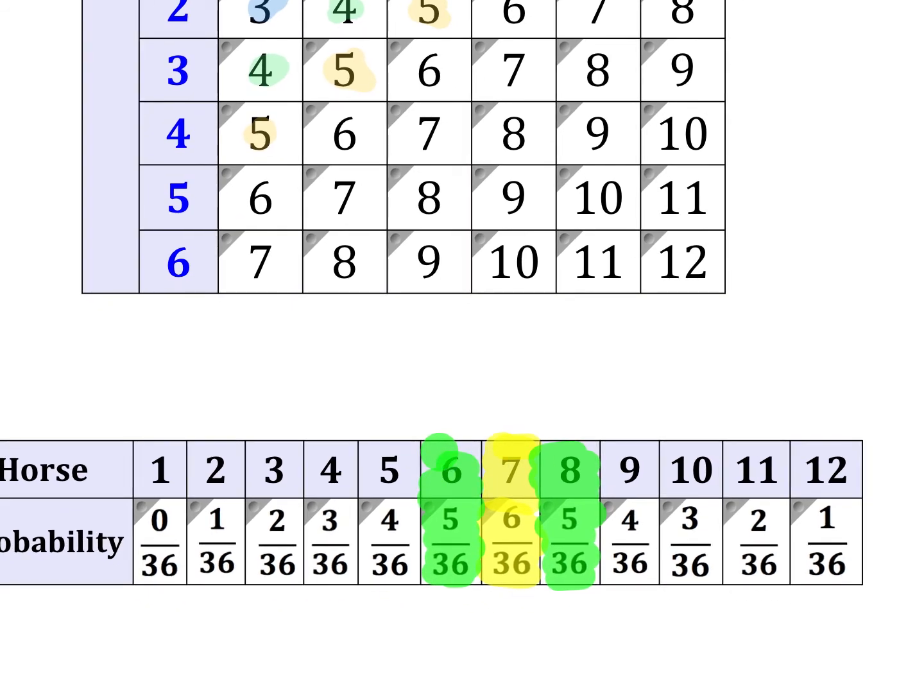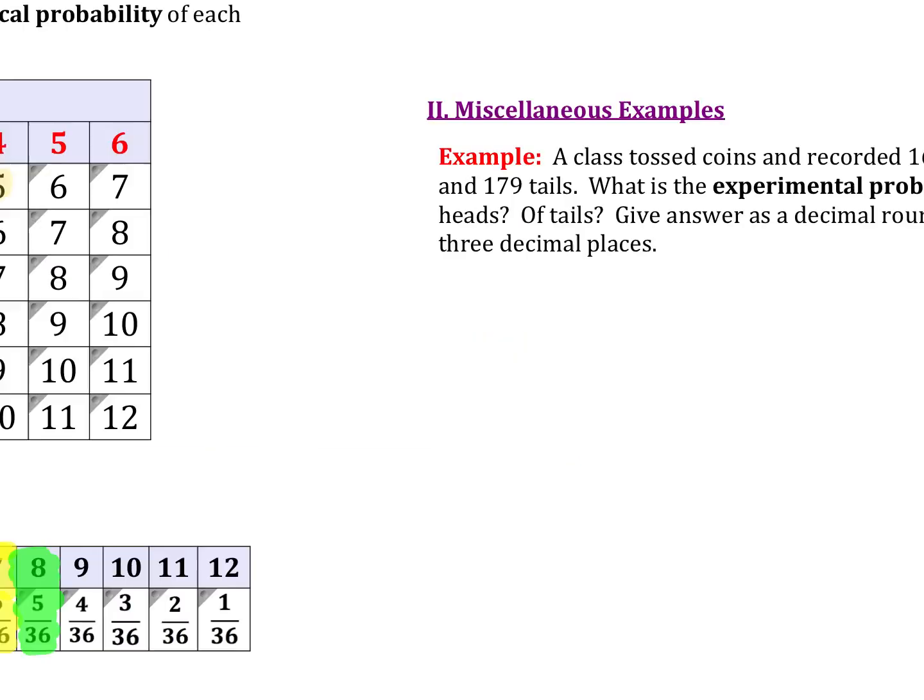So there's all these different combinations, and as we look through this, in theory, the most likely numbers that we'd have would be 6, 7, and 8, because out of the total 36 combinations here, a 6 shows up 5 different times, a 7 shows up 6 different times, and an 8 shows up 5 different times. So an 8 and a 6 are equally as likely, in theory, to get.